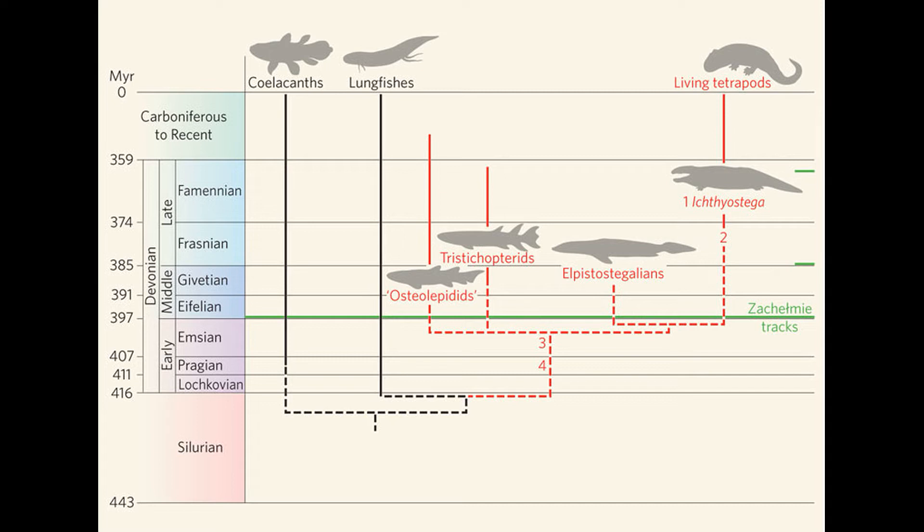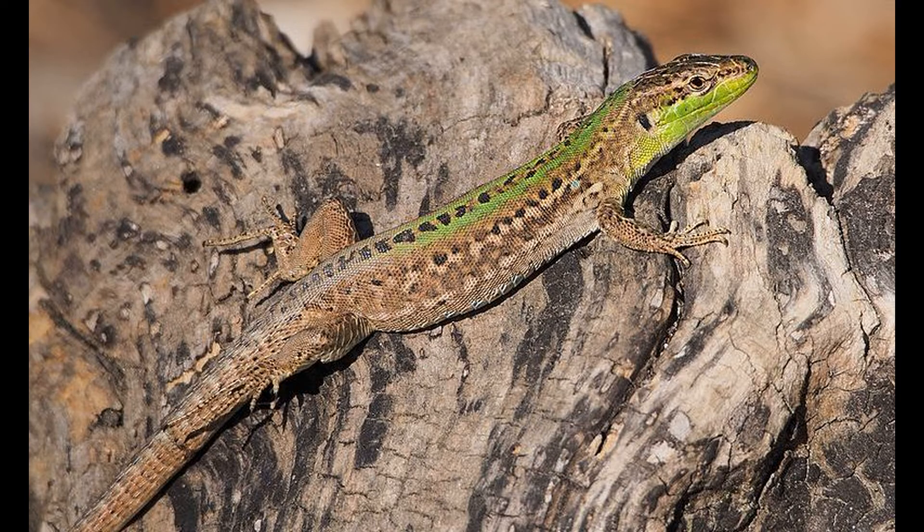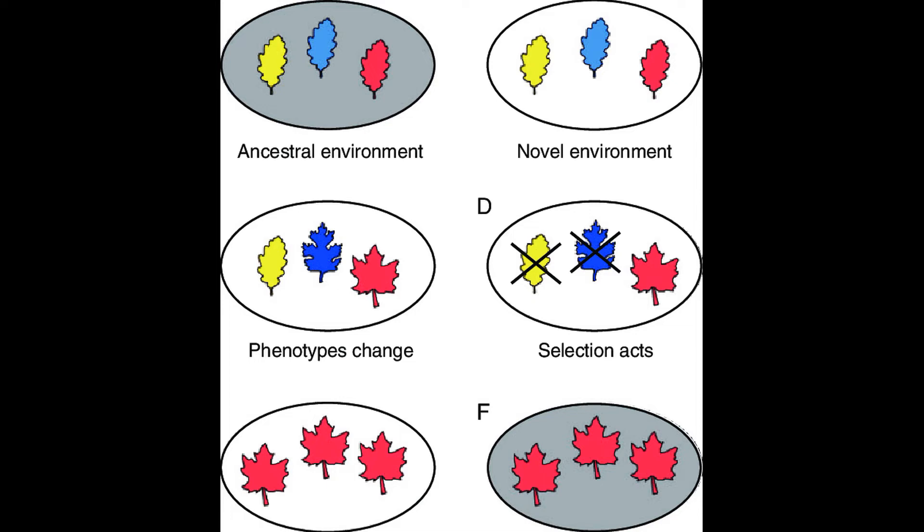We already know that lungfish can spend some time on land wrapped in their protective cocoons, but the extent to which other sarcopterygians spent time on land is pretty much unknown. Probably, many sarcopterygians could spend a little time on land, and tetrapods represent the lineage that shifted its niche to totally terrestrial. In this paper, the researchers wondered whether phenotypic plasticity played a role in the evolution of tetrapods. We have talked about phenotypic plasticity before on this channel in our video, The Italian Wall Lizard. In essence, the environment can induce changes in the phenotype, and under certain conditions, alleles that allow for a particular range of phenotypes could be naturally selected. Over generations, this range could be whittled down until only a select few phenotypes remain and become fixed in the population.